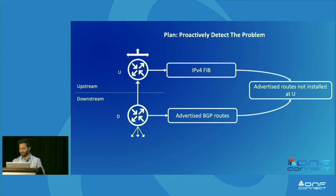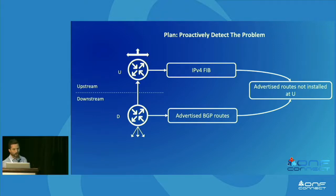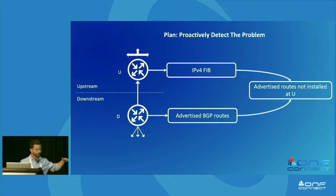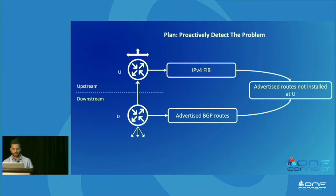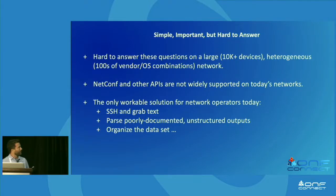The good news is that operators found the root cause and have a simple plan to solve it: proactively detect the problem by monitoring the advertised BGP routes from the downstream neighbors, getting the IPv4 FIB from the upstream router, and comparing them to find advertised routes that are not installed at U. As soon as this happens, they have a problem they can proactively address. It's a simple idea — important, yet actually very challenging to implement because of the scale and diversity in their network.